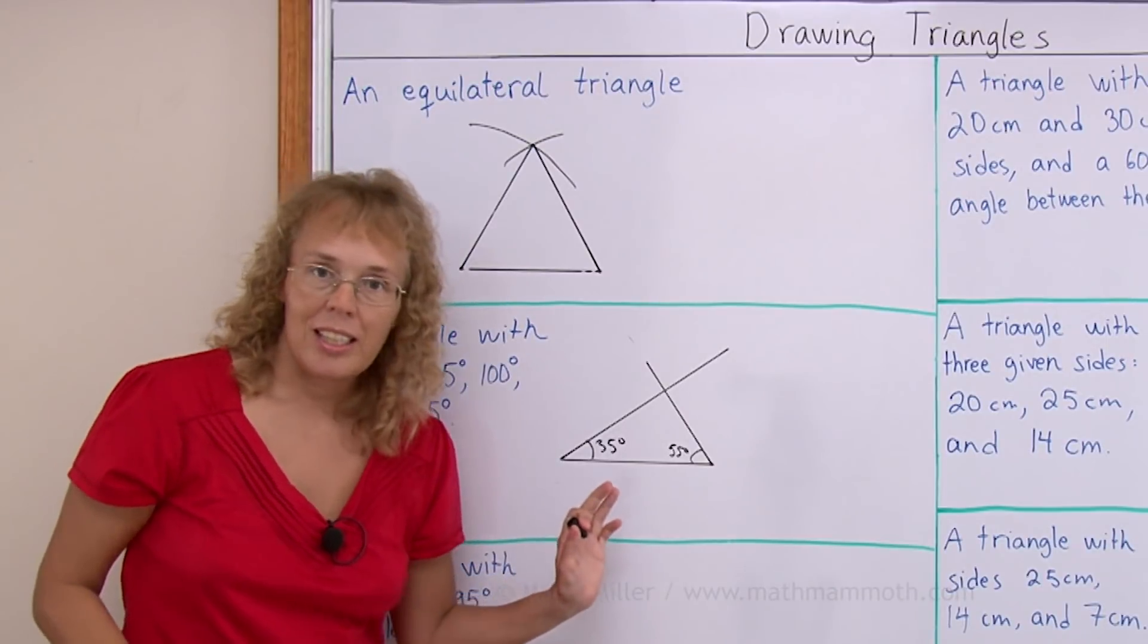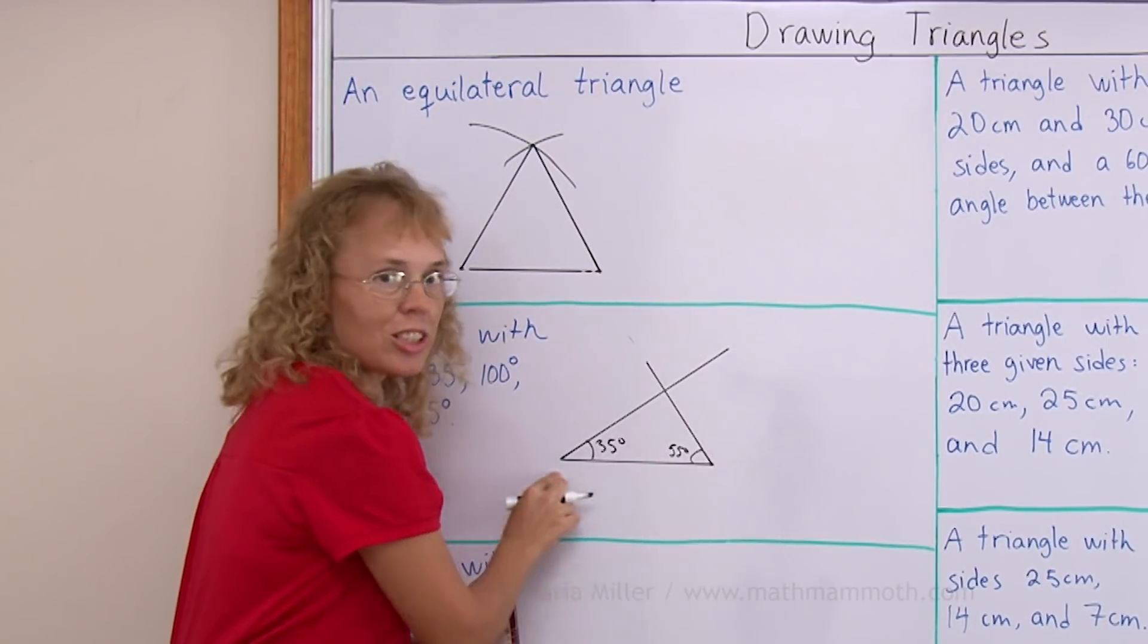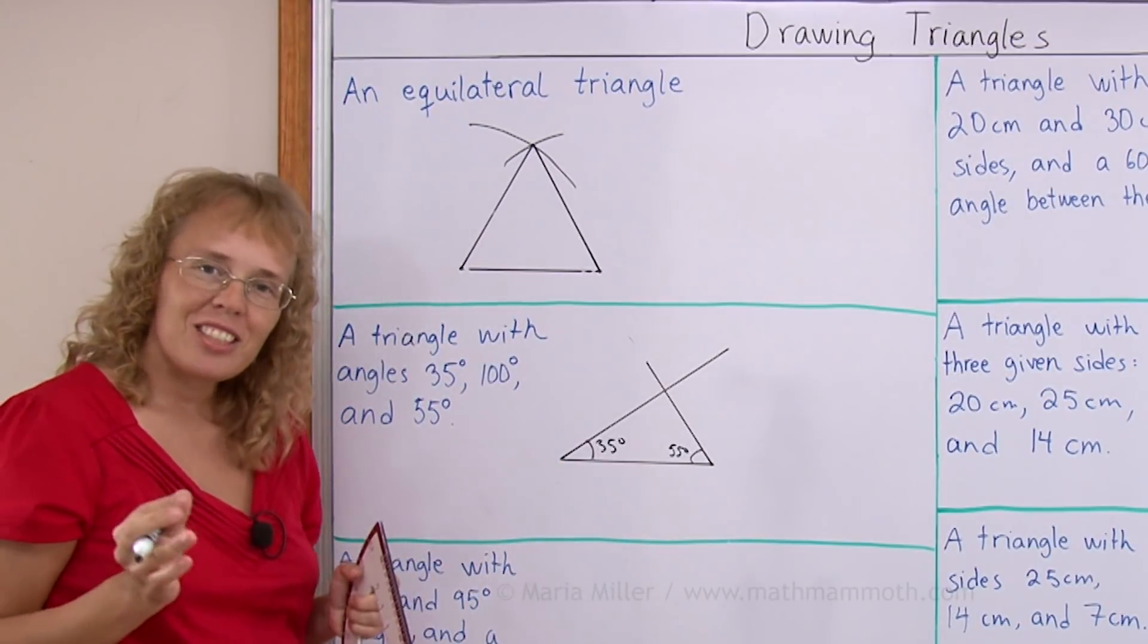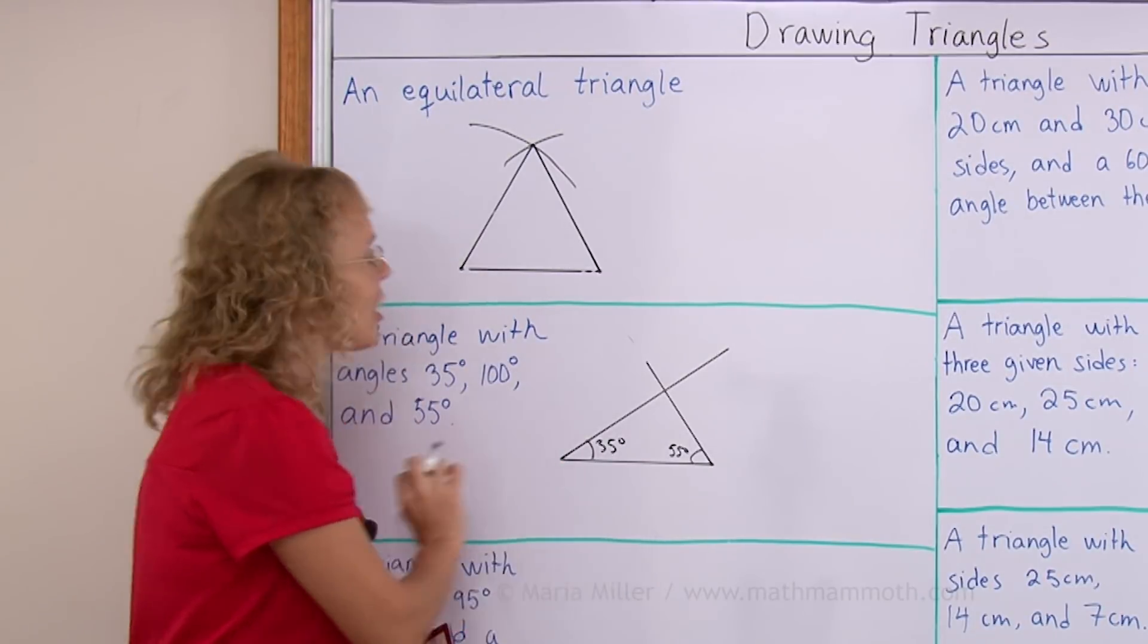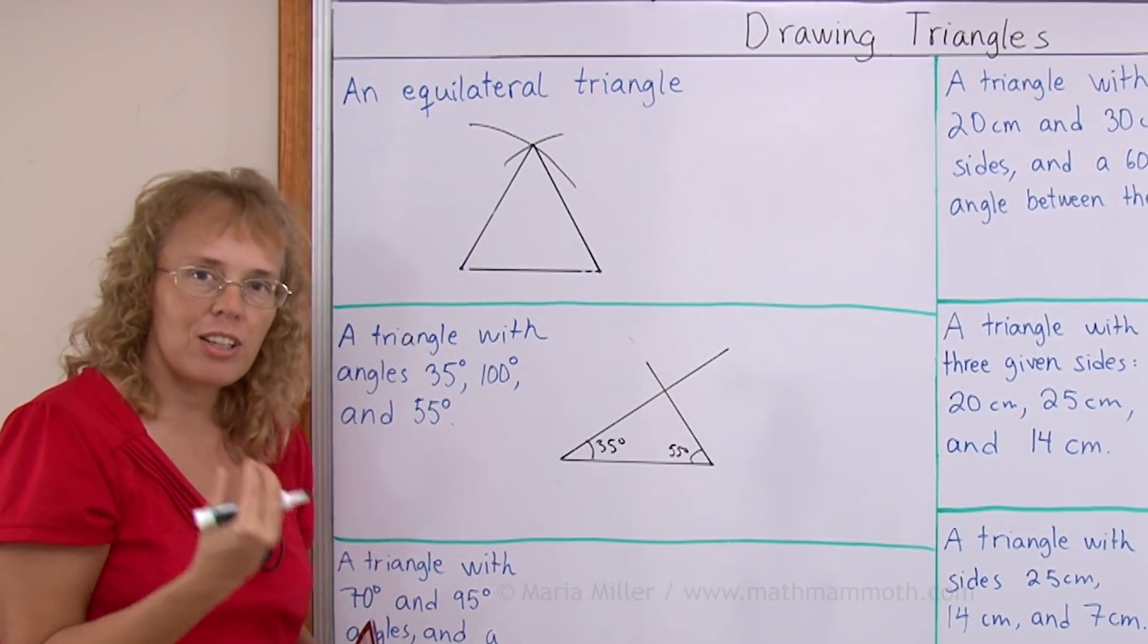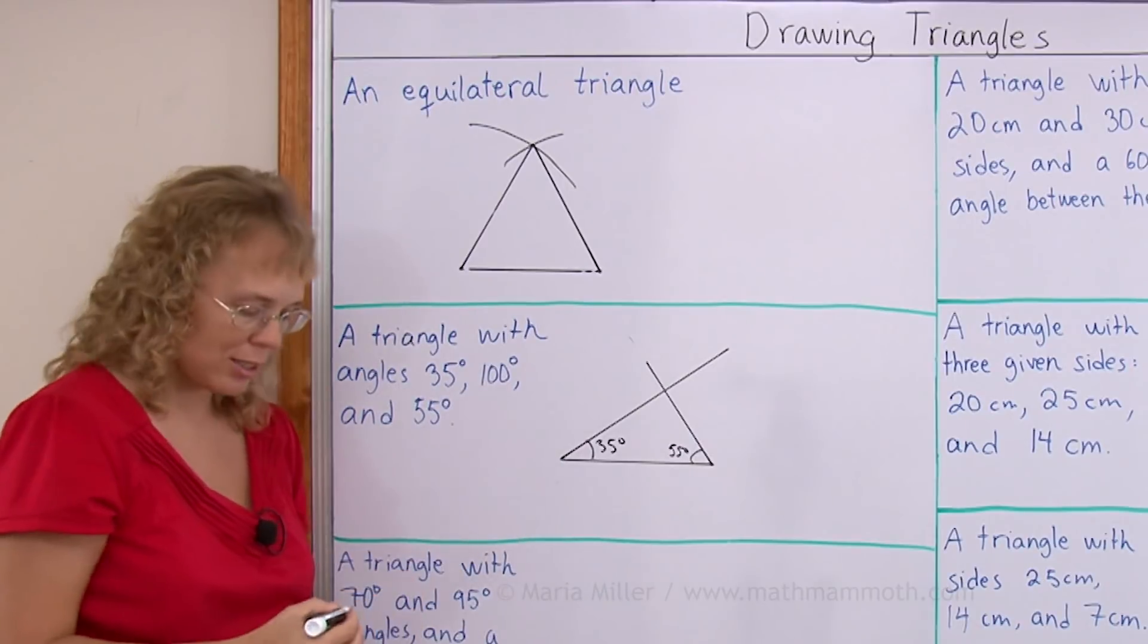But in the beginning I could have chosen a longer side here or shorter one. So there are again an infinite number of these kind of triangles. When you're given the three angles for triangle, it does not totally define the triangle. There's still many different ones.